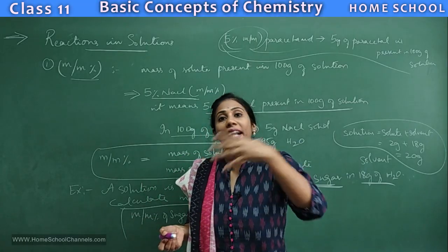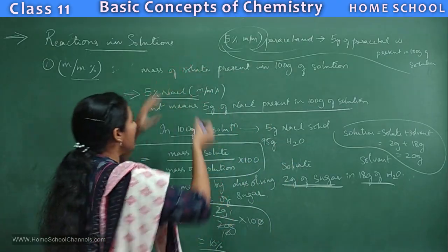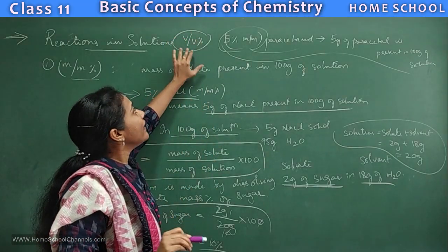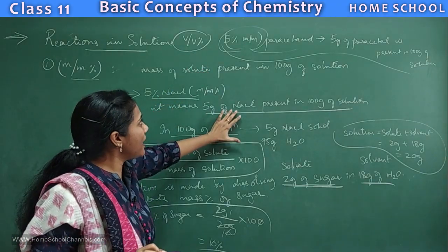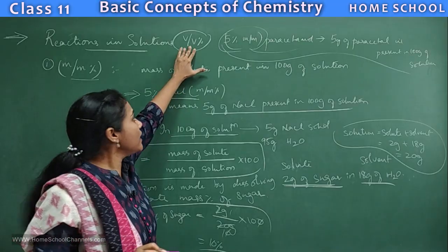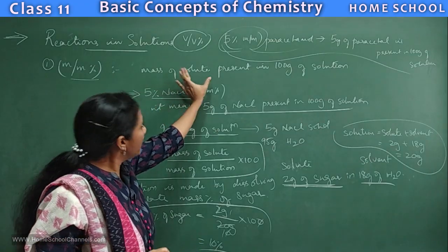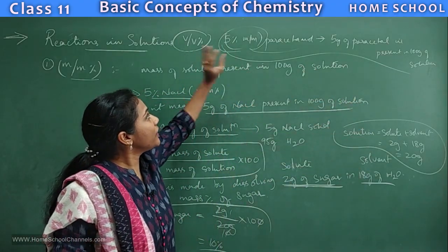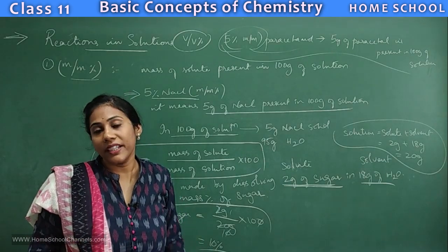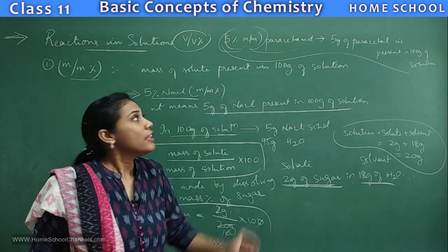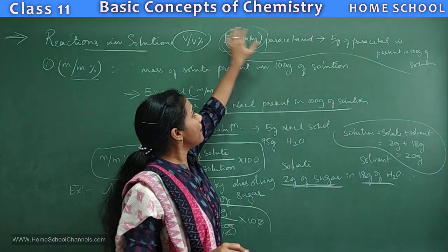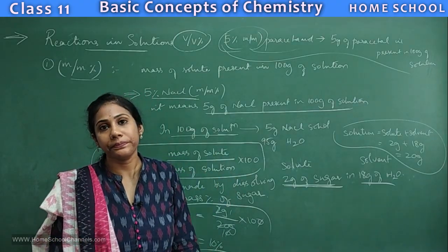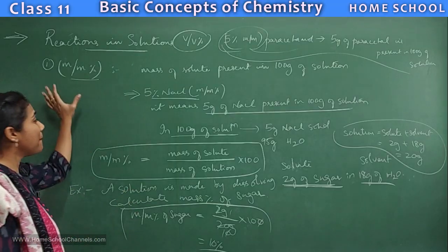Another related term is volume by volume percent: the volume of solute present in 100 mL of solution. Both mass/mass percent and volume/volume percent are frequently used in making tablets or syrups, allowing you to understand how much ingredient is present in 100 g or 100 mL of solution.